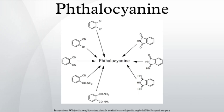Synthesis. Phthalocyanine forms upon heating phthalic acid derivatives that contain nitrogen functional groups. Classical precursors are phthalonitrile and iminoisoindole. In the presence of urea, the heating of phthalic anhydride is a useful route to H2Pc. These reactions are more efficient in the presence of metal salts. Other precursors include cyanobenzamide and phthalamide. Several of these starting materials are shown in the figure. Using such methods, approximately 57,000 tons of various phthalocyanines were produced in 1985.